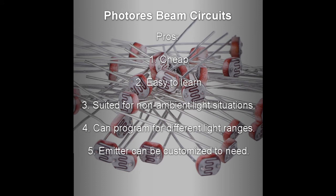Okay, so in conclusion photoresistor beam circuits. The pros are they're cheap. As of this video, a dollar or two. They're fairly easy to learn once you get the programming basics down. You can also hook them up in reverse polarity. They are suited for non-ambient light situations. So for example, inside an enclosure somewhere where ambient light won't interfere with its readings. And it makes it also very flexible. You can program for different light ranges to be accepted. This makes it pretty good for changing situations. The emitter can also be customized to need. So for example, if you need precision, go with a laser. Or if you just need a cheap alternative, a flashlight might be a good choice for you.